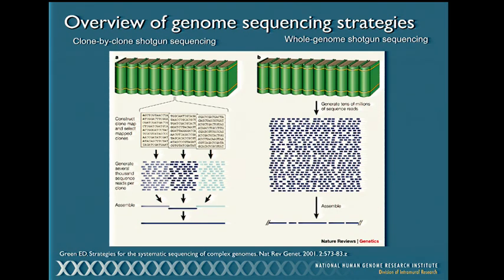Once they had mapped the BACs, they sequenced them. BAC inserts of about 350 kilobases are too big for the sequencing machine, so they were broken up into smaller pieces by a process called shotgunning, which generates sequences of a couple hundred nucleotides. Using genome assembly programs, you stitch these pieces back together by looking at overlapping sequences. Because you made a map of the BACs along the chromosome beforehand, you know the order of the pieces and can end up with a chromosome sequence.